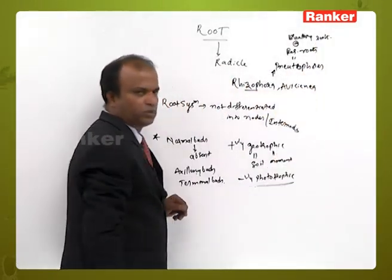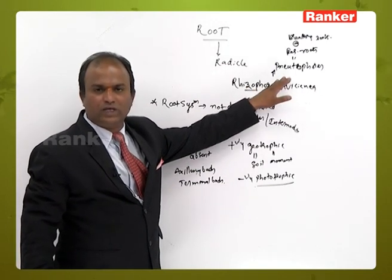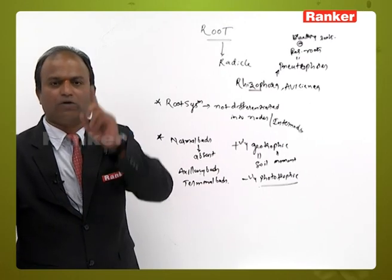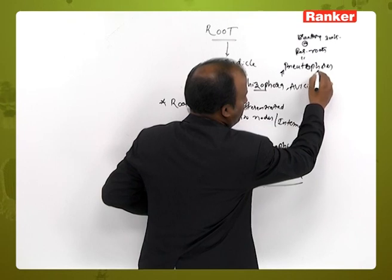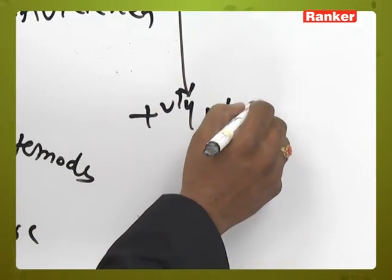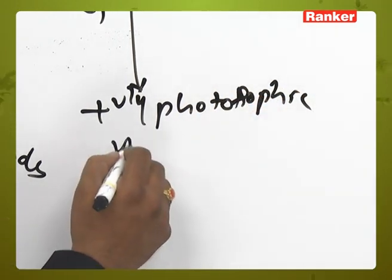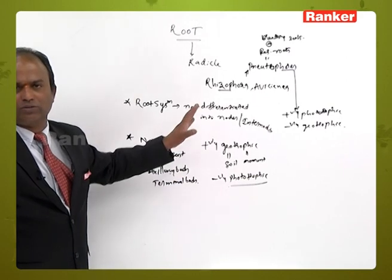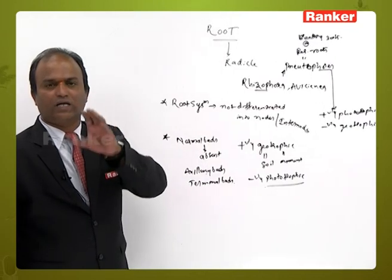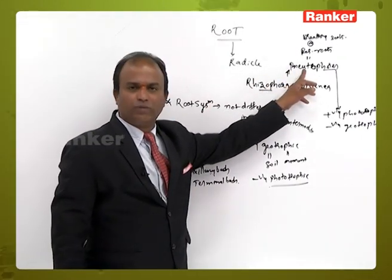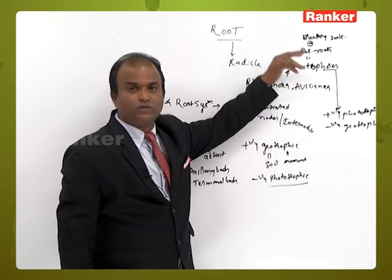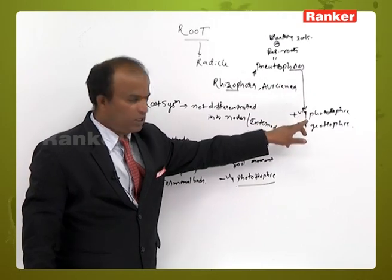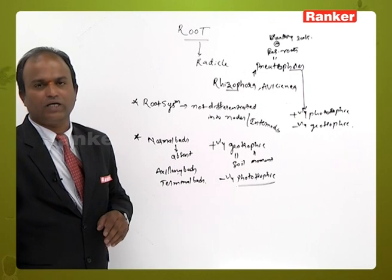In Rhizophora and Avicennia, the pneumatophores are always growing positively phototropic and negatively geotropic — meaning they grow upward toward light rather than downward into the soil. This is the characteristic feature of pneumatophores belonging to the root system.